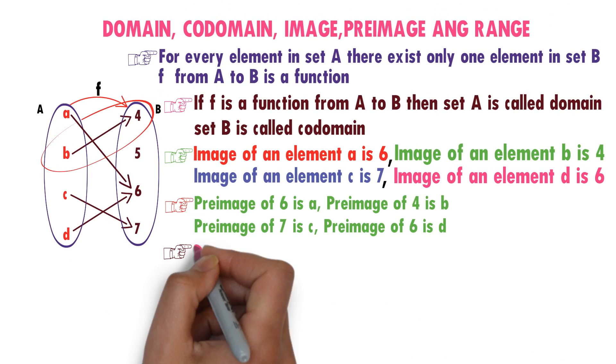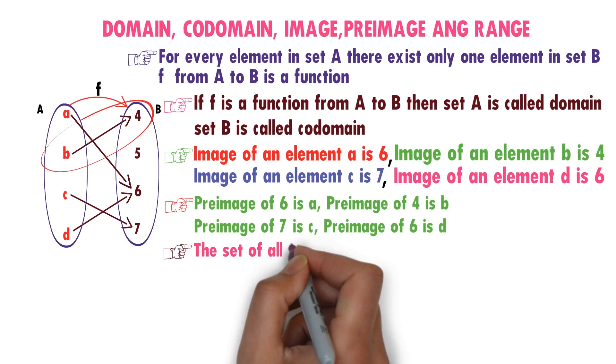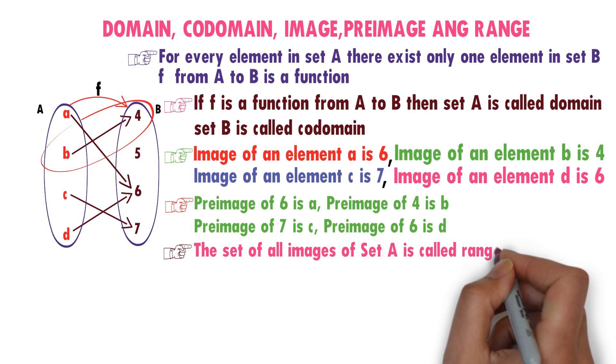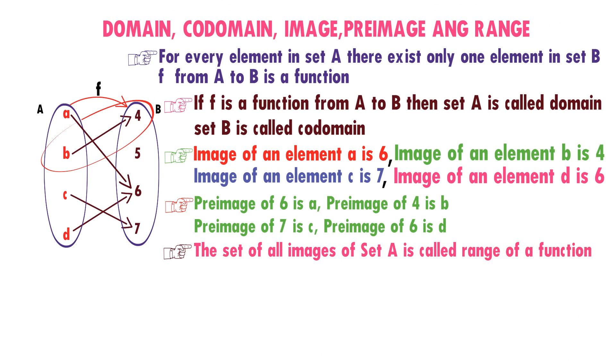Range. The set of all images of set A is called range of the function F. Observe the diagram. All images of set A are in B. What are those? 4, 6, 7.